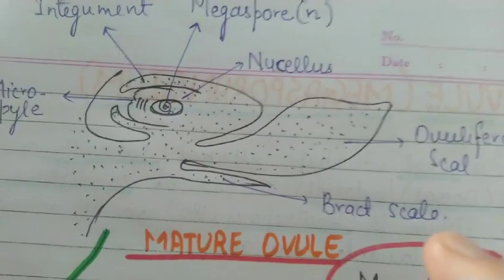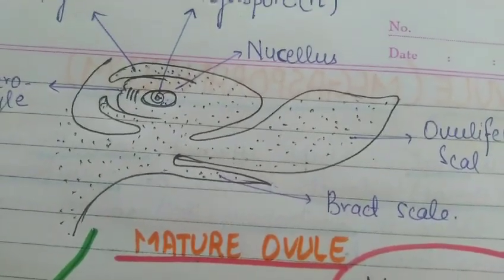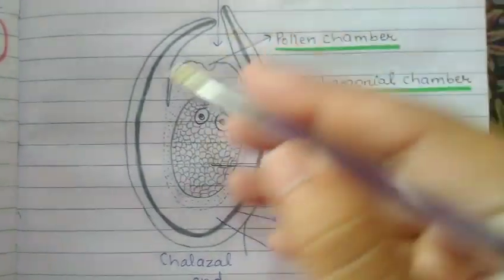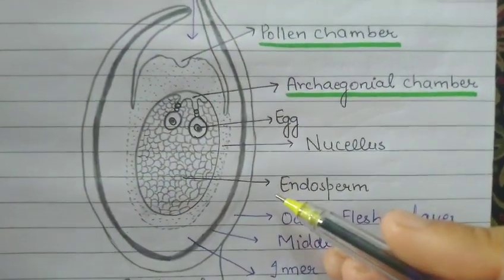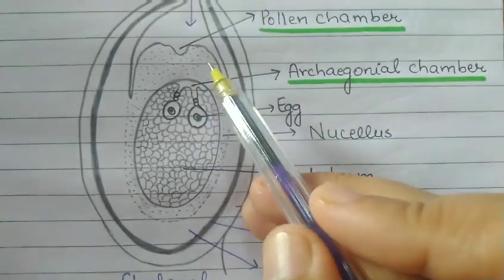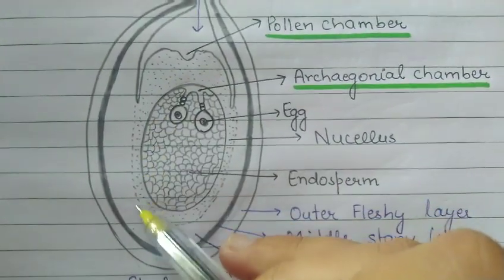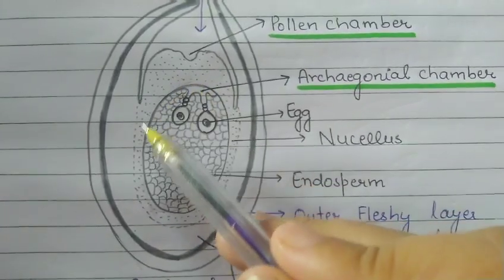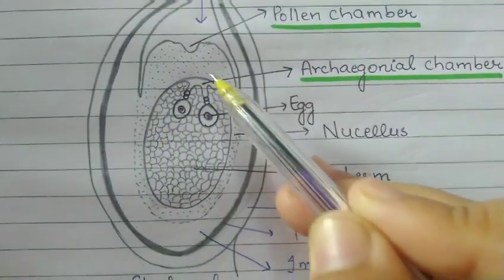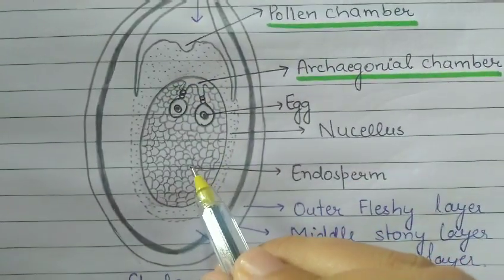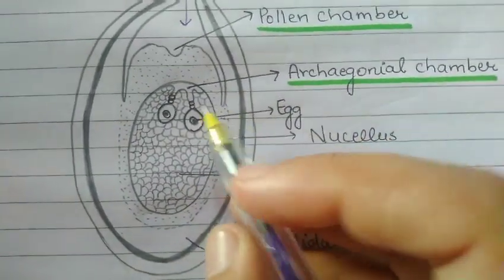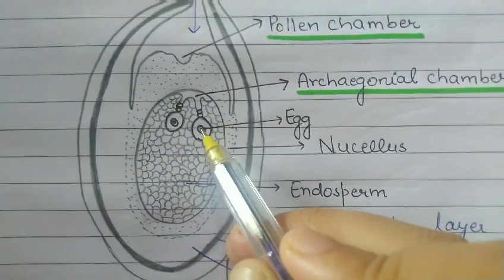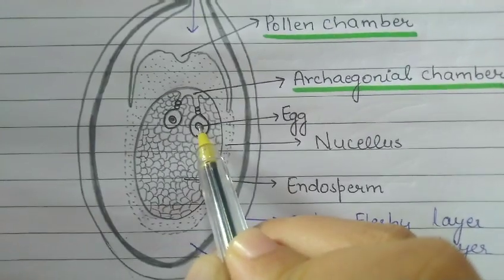Now let's study the actual structure — the totally matured ovule which is ready for fertilization. This is the structure of mature ovule which is ready for fertilization. This is the nucellus. Nucellus is where a single functional megaspore develops into female gametophyte which is endosperm. And in this endosperm, archegonia are developed. The archegonia present here has a single egg.